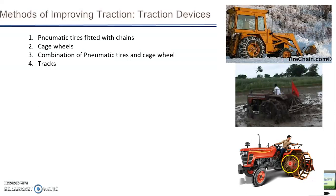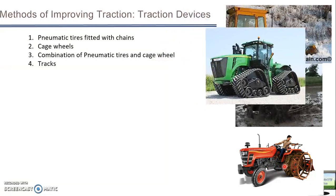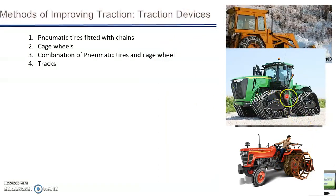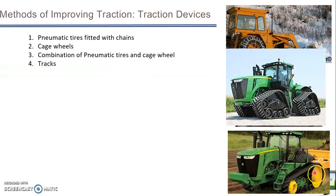A half cage wheel is called a half cage wheel and a full cage is called a full cage wheel used in puddling. Finally you have tracks - you can find track-type tractors. There are two kinds: full track and half track. Track is the best way to get traction but it is costly, so for higher horsepower tractors only you can use tracks.